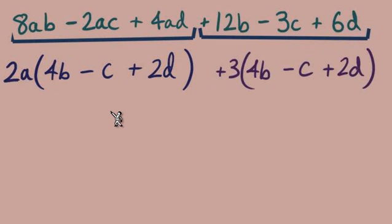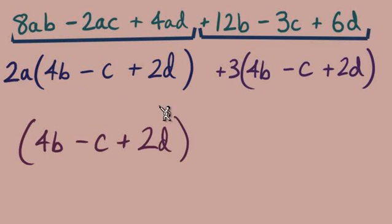We can continue with factor by grouping this 4b minus c plus 2d is one factor in the answer and the other is the 2a plus 3.